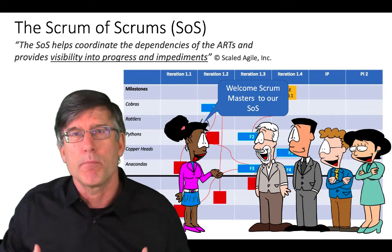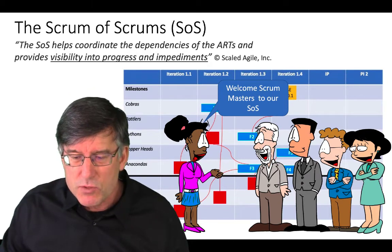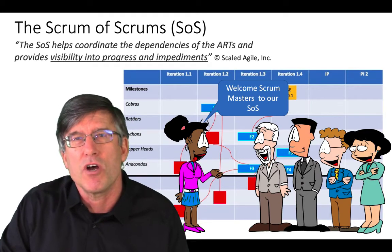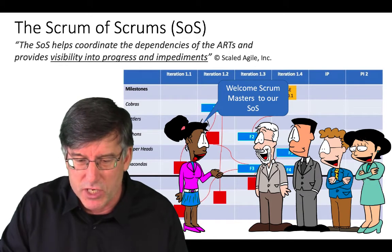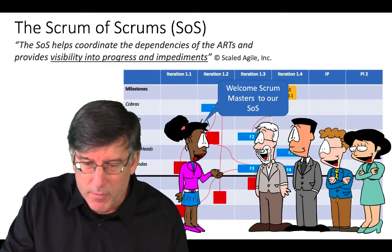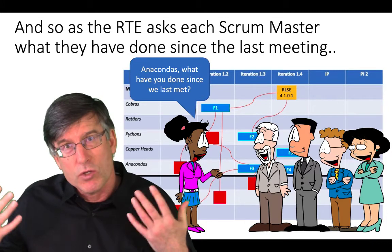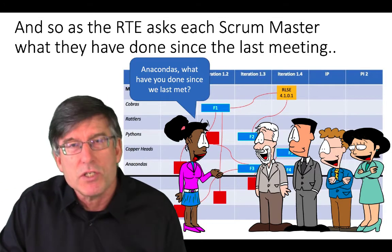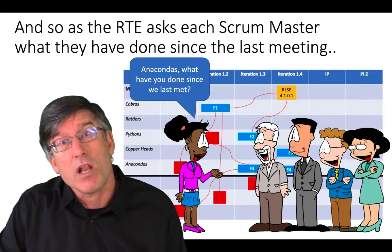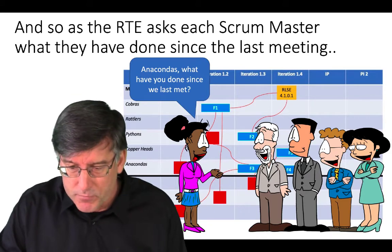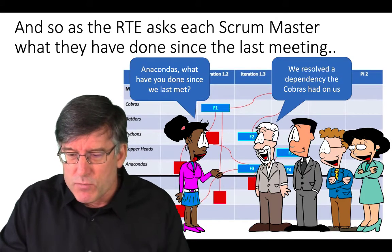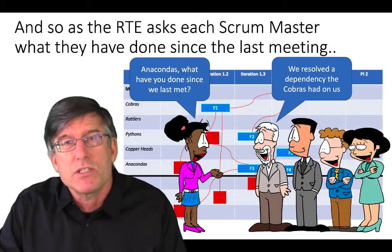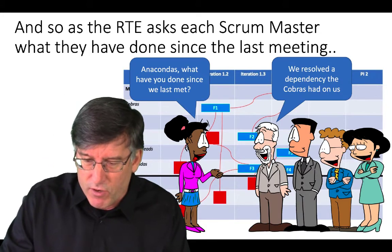We'll have our typical SOS with the RTE talking to all the Scrum Masters from the various teams on the train. The RTE starts facilitating the process, asking questions like: what have you done since our last meeting? And one of the teams will say, well, we managed to resolve a dependency that the Cobras have on us.